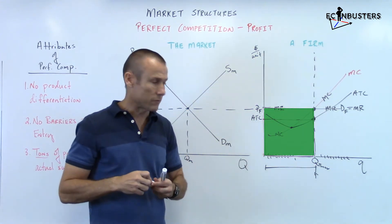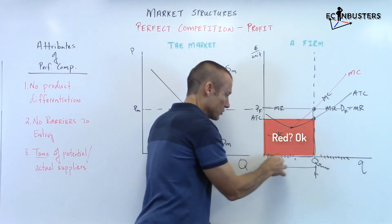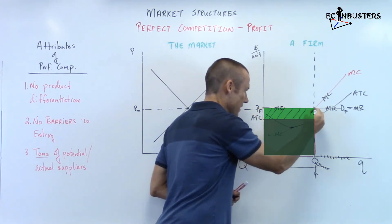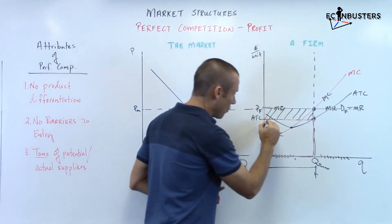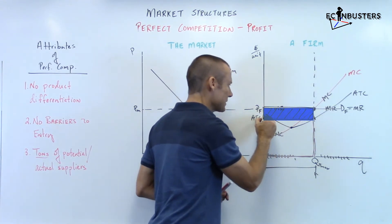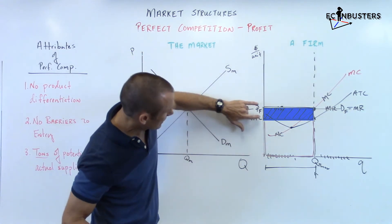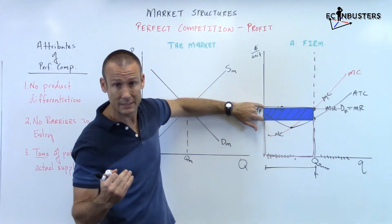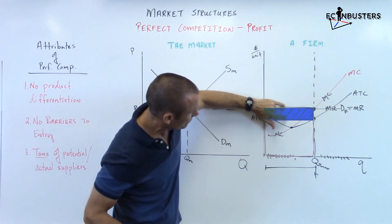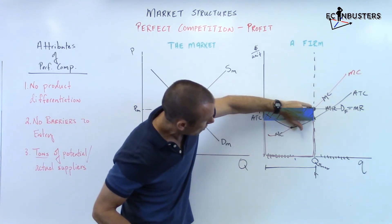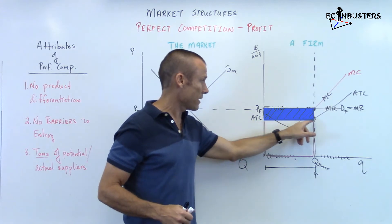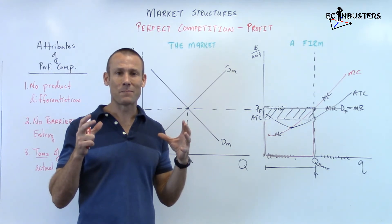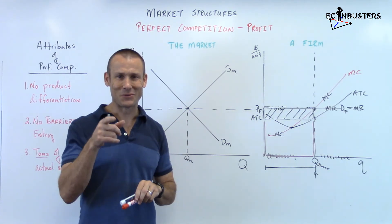ATC times quantity equals total cost. The bigger box is total revenue and the smaller red box is total cost, so total profit is that rectangle — the difference between the two boxes. That vertical distance from price down to ATC is the per-unit profit, and they're making that per-unit profit over the entire quantity produced. That rectangle is their total profit. That is a perfectly competitive firm making a profit.